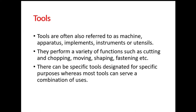Tools and implements are often referred to as machines, operators, implements, instruments, or utensils. When it comes to gardening, tools are machines or implements that perform a variety of functions — right from cutting, chopping, moving, shaping, fastening, digging, etc. There are specific tools designated for specific purposes, but some tasks require more than one tool. In those cases, we can use a combination of tools to get the work done.